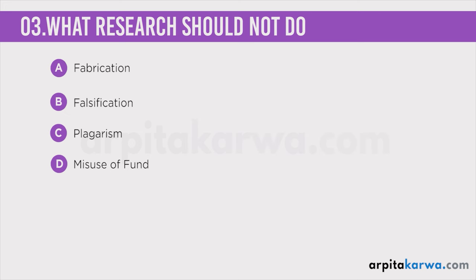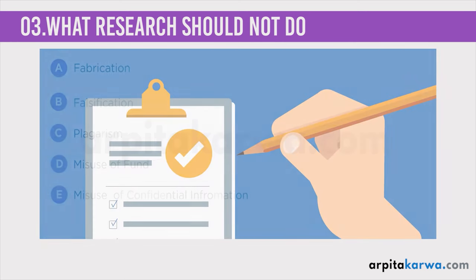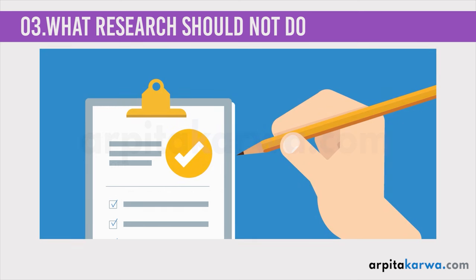Another misuse that students do is misuse of confidential information. As we saw, in research you collect data from many people. When you look at the data you have the names of those people and some really confidential questions that they have answered. Ideally, the questions and the names should only be used for the purpose of research, and you should ensure that the names are not published publicly anywhere.